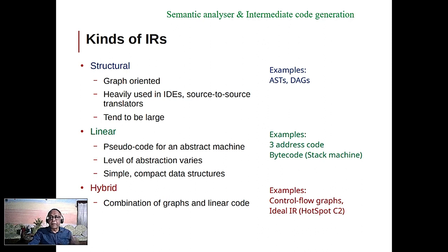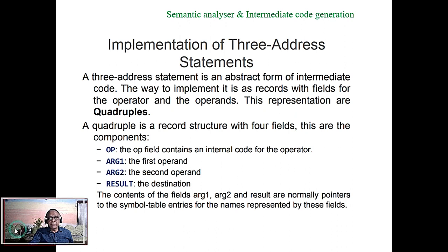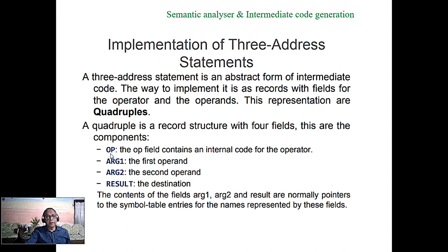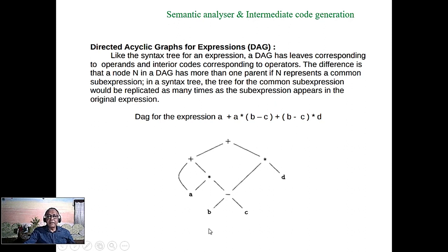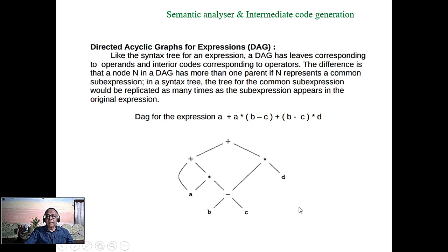Three address code is traditional in compilers: argument one is the first operand, argument two is the second operand, result is the destination, and the operation. In a directed acyclic graph, say the computation b minus c appears twice; in the AST both must be computed separately, but in the DAG we compute b minus c once and reuse it, making it faster and more efficient.